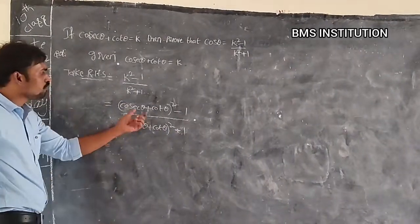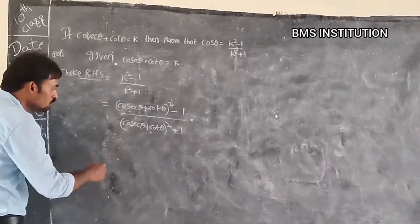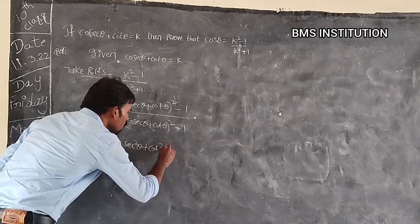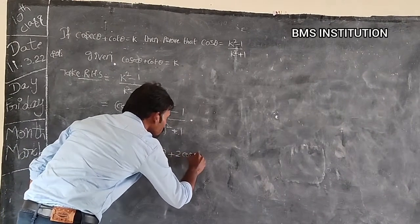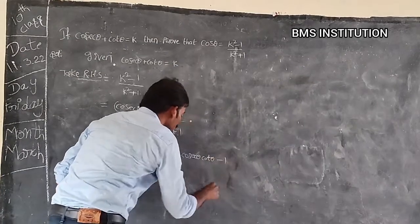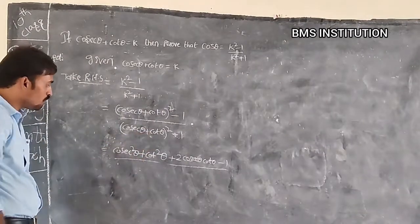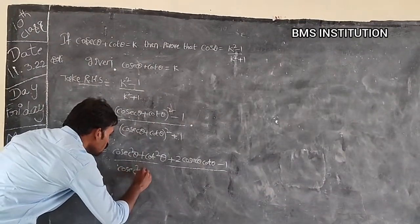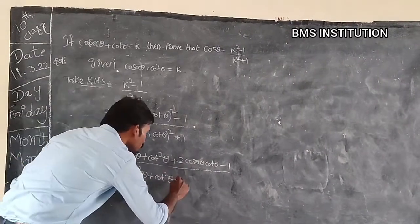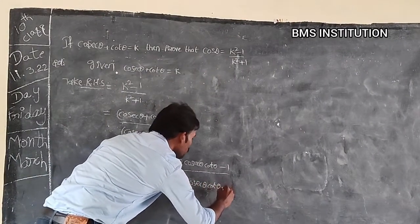Now we expand using the (a + b)² formula. In the numerator: cosecant²θ + cot²θ + 2 cosecant θ · cot θ − 1, divided by cosecant²θ + cot²θ + 2 cosecant θ · cot θ + 1.